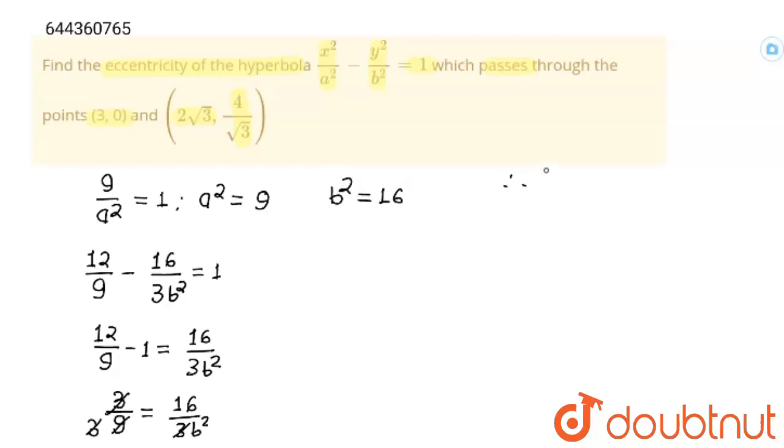And here if you see, the value of b² is greater than a². So here eccentricity will be equal to square root of 1 + b²/a², and this will be equal to square root of (a² + b²)/a².